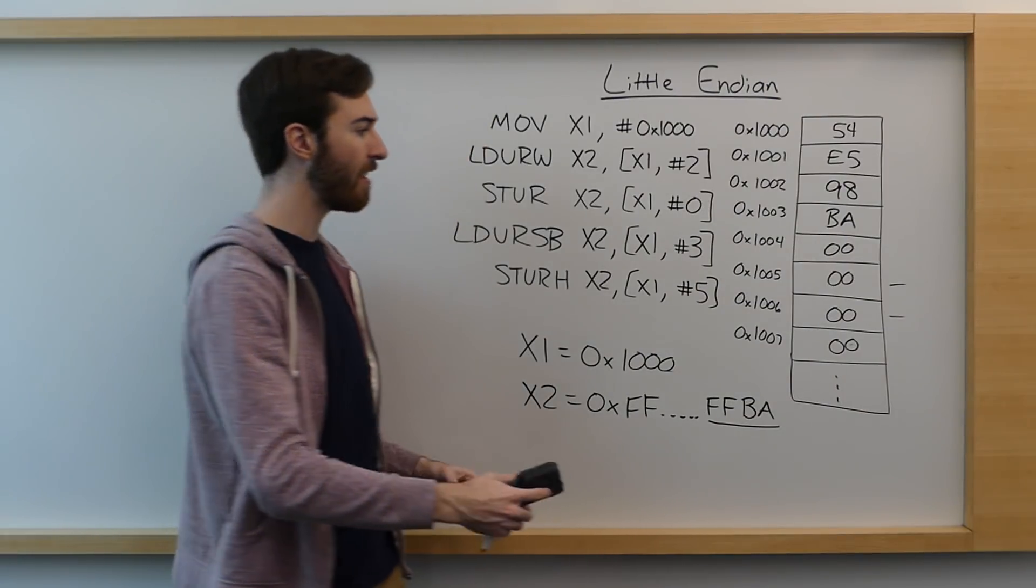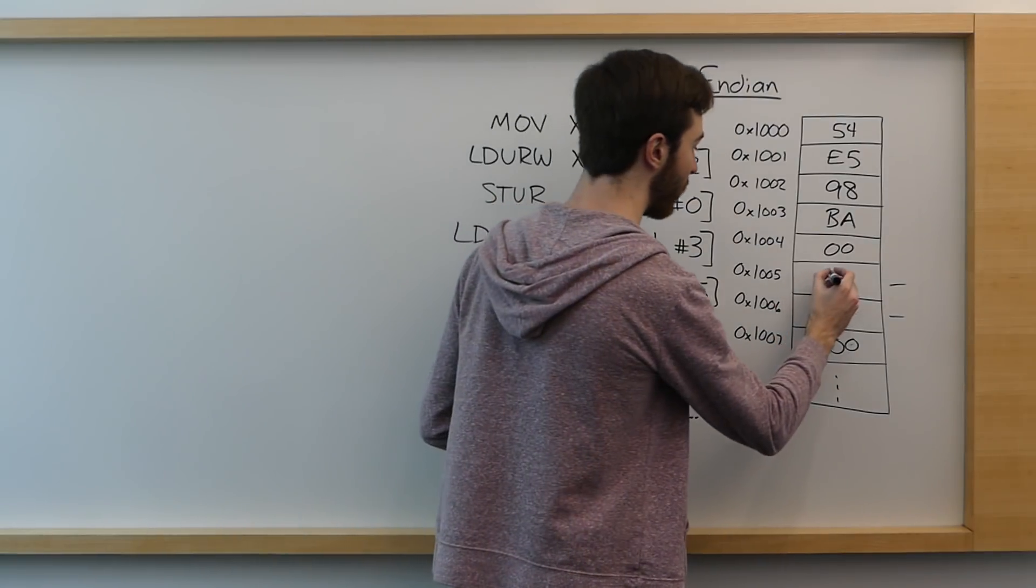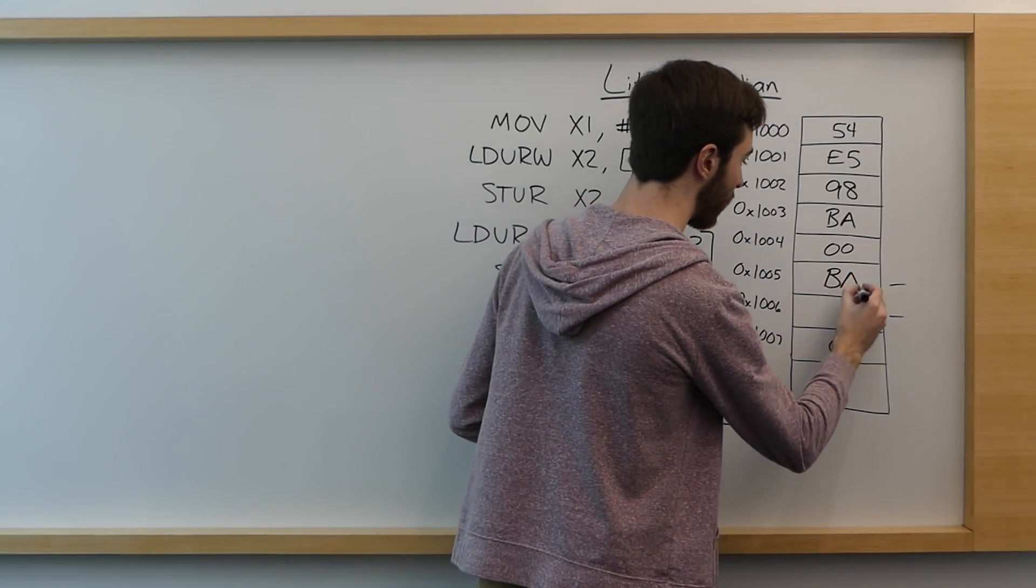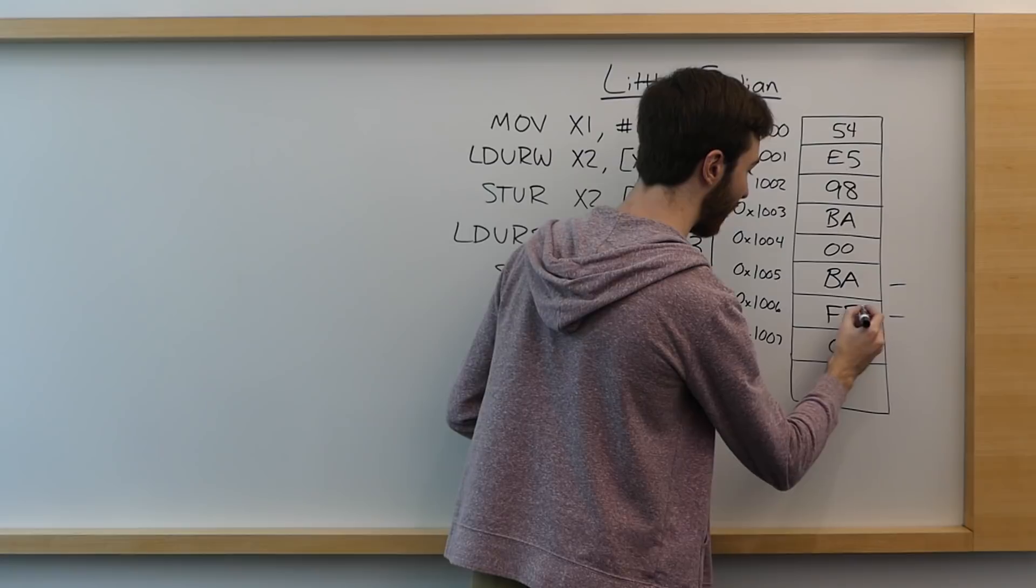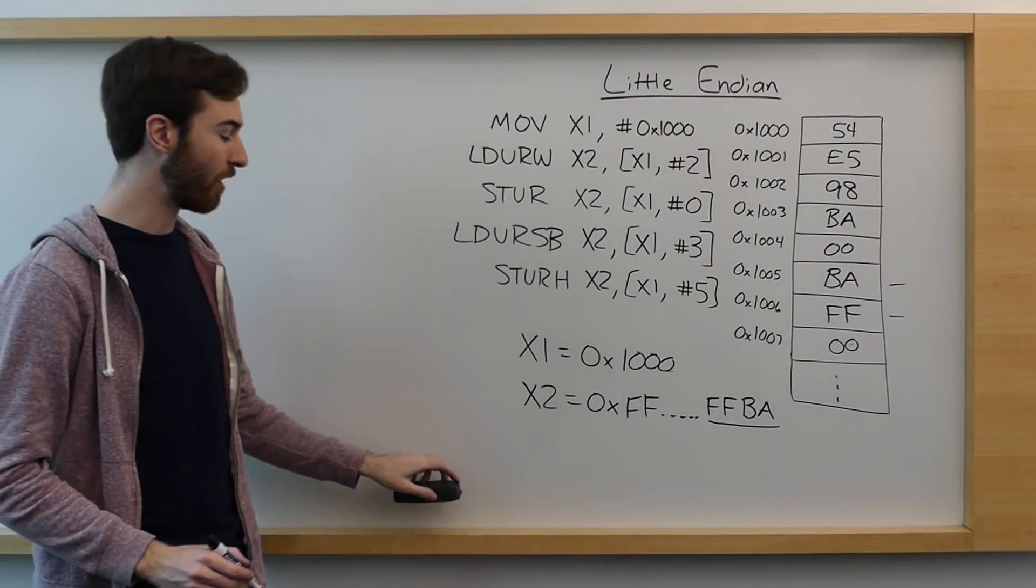And the value that it stores is the least significant two bytes of our number, which is FFBA. And again, it's a little endian, so the least significant comes first, BAFF. And this is what our system would look like after we run these five instructions.